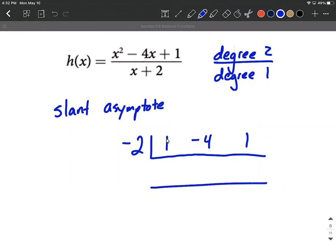We'll leave a blank row for now. That 1 comes down, and then our synthetic division process goes multiply. Negative 2 times 1 makes negative 2. And then we're going to add vertically, so negative 4 plus negative 2 makes negative 6. Again, we multiply. Negative 2 times negative 6 makes positive 12.